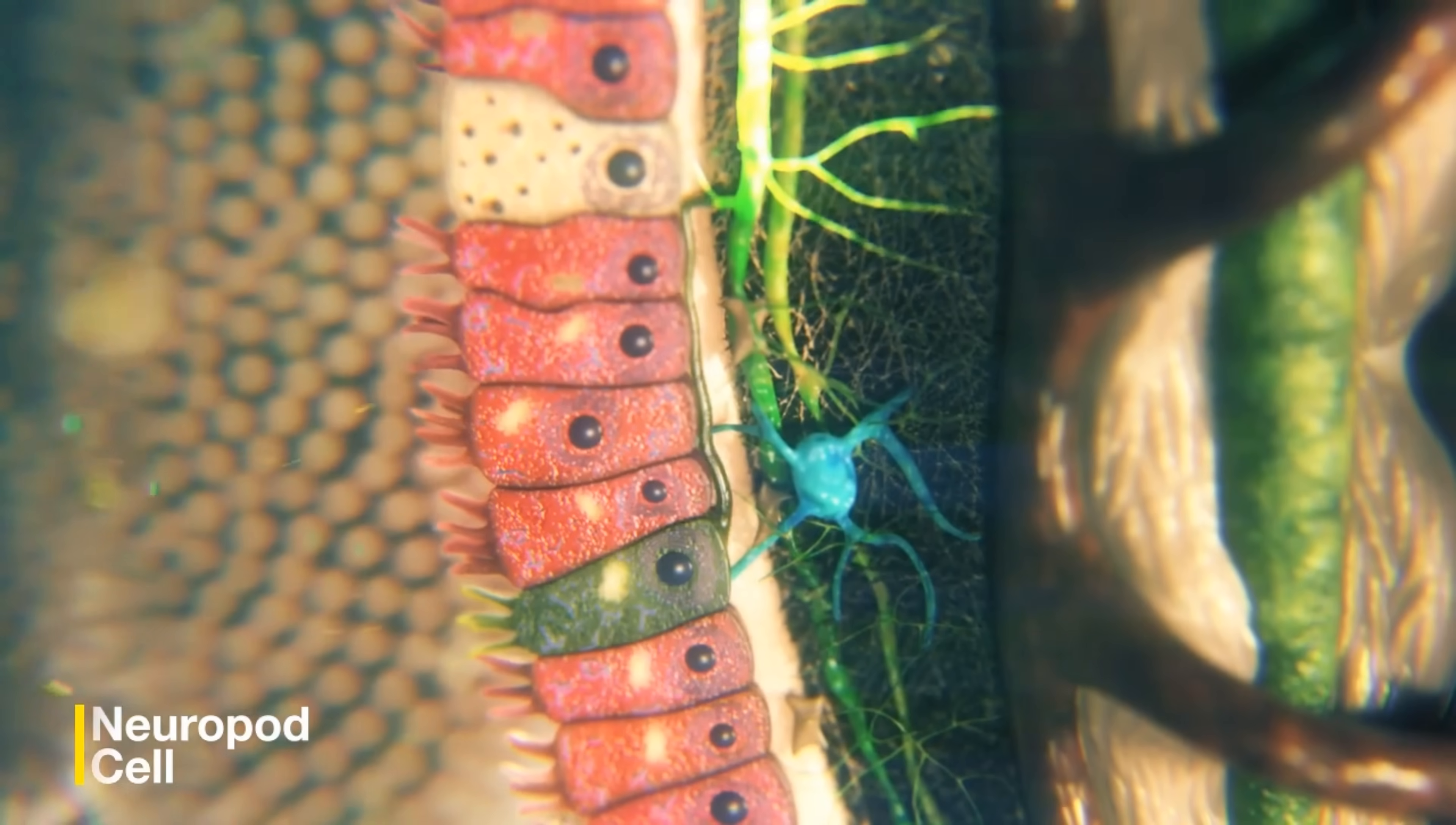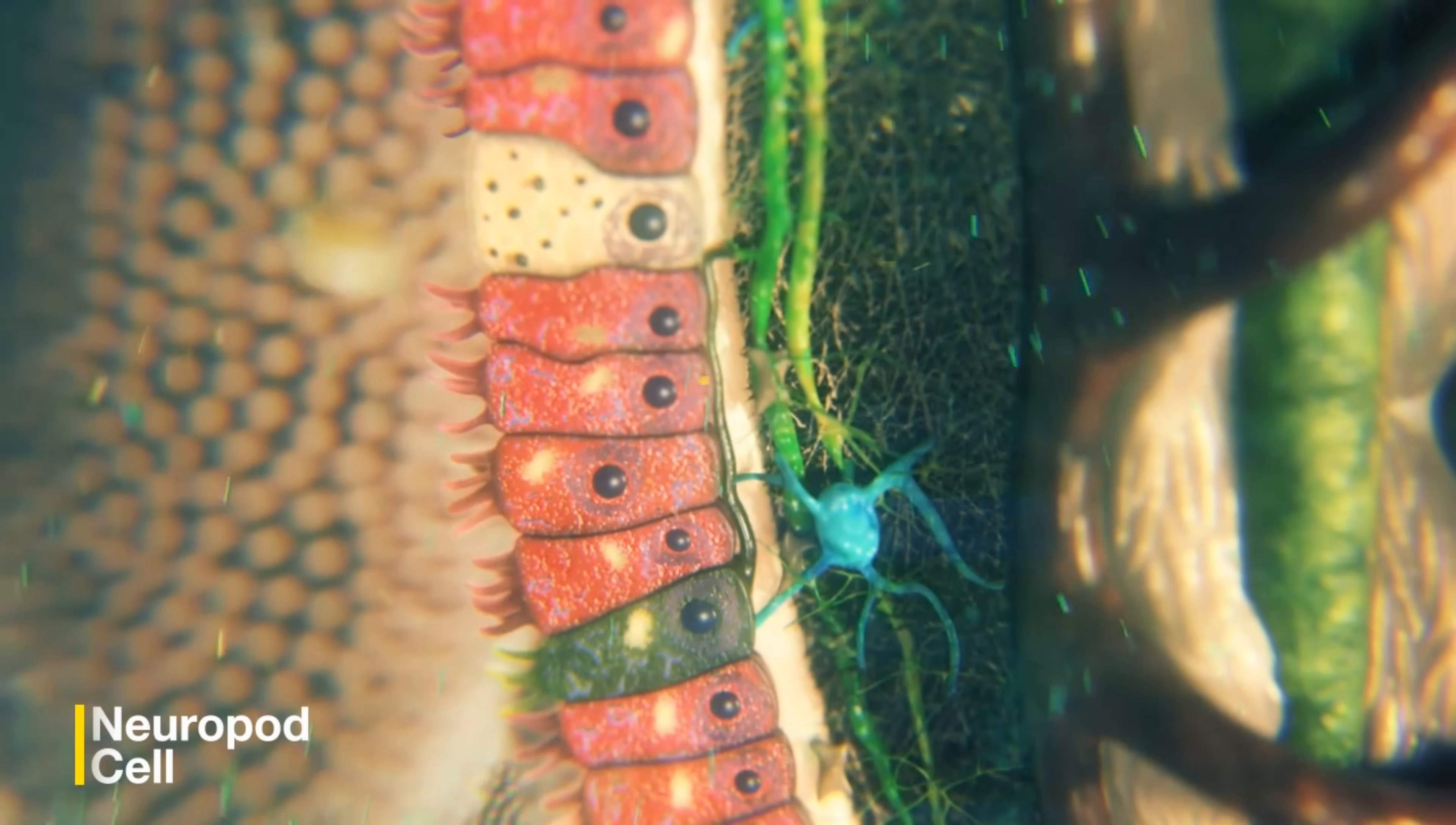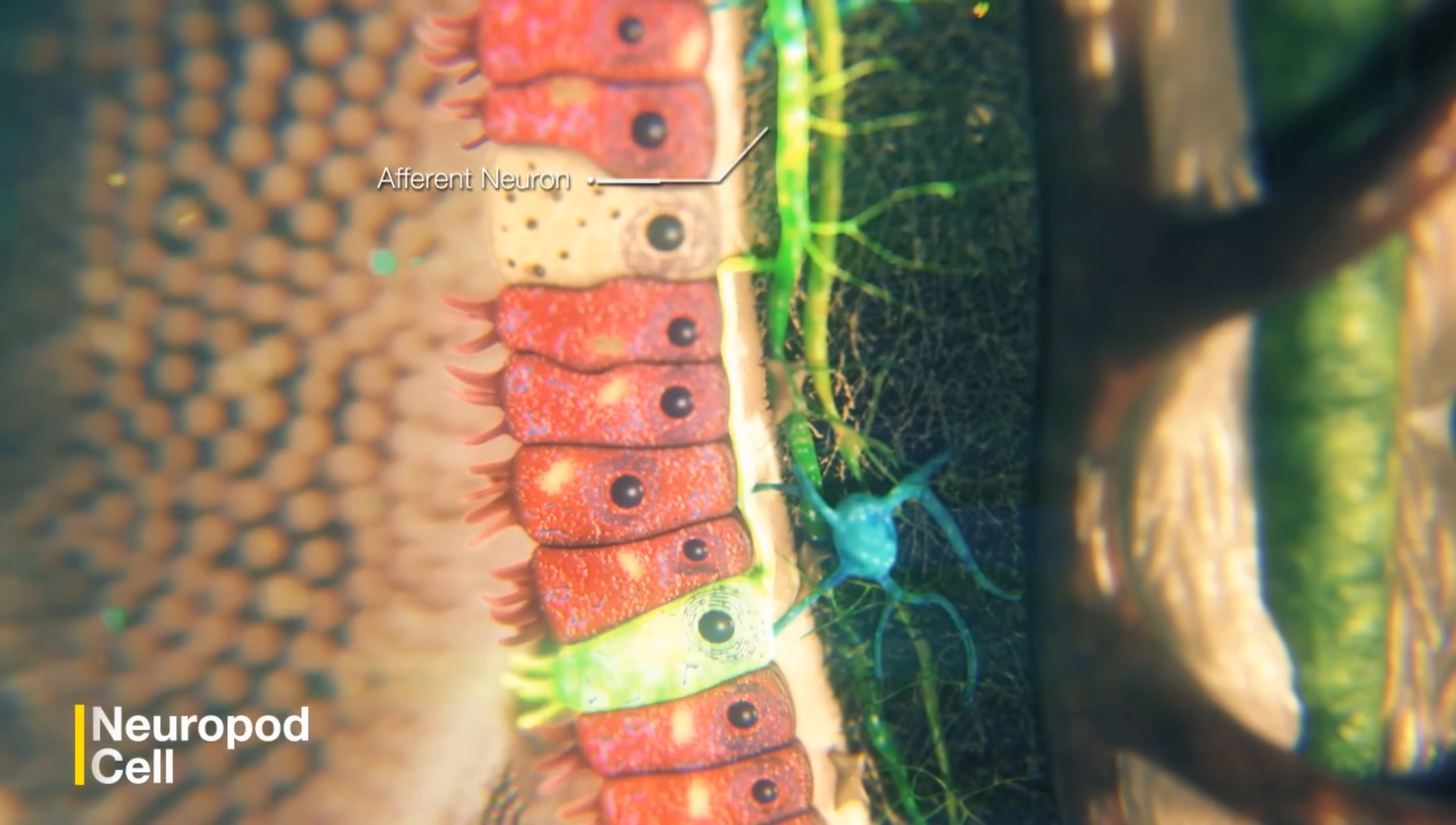Inside neuropod cells, signals from stimuli are converted into tiny electrical pulses. These pulses propagate via synapses onto the afferent neuron of the vagus nerve.